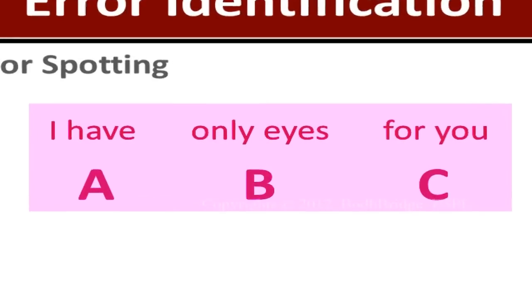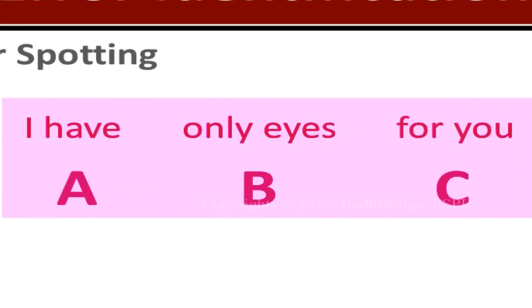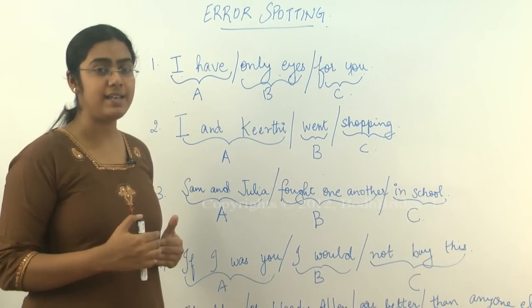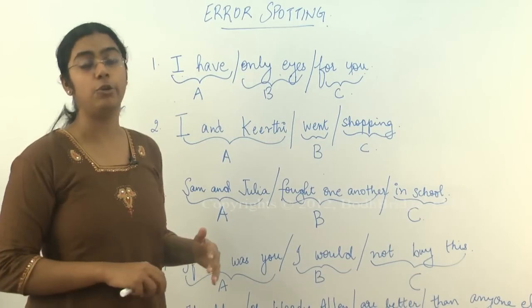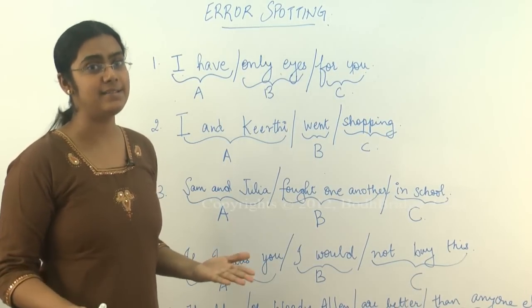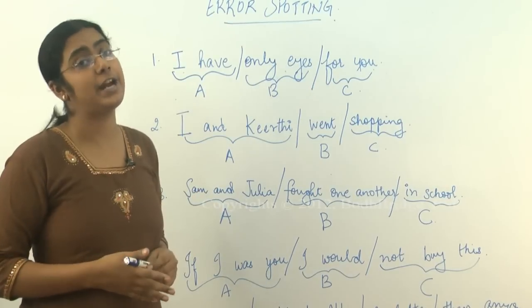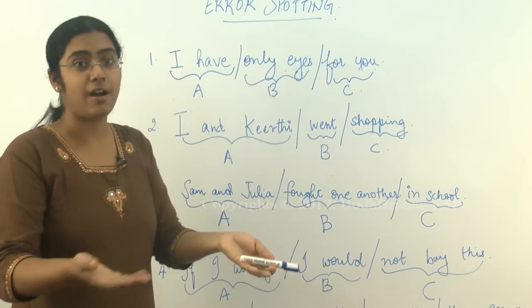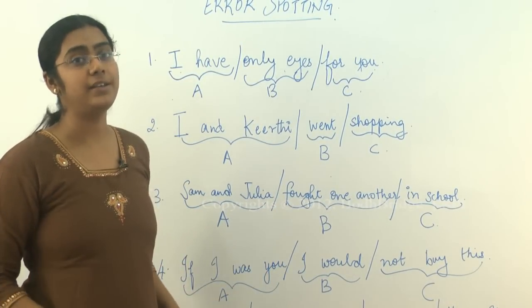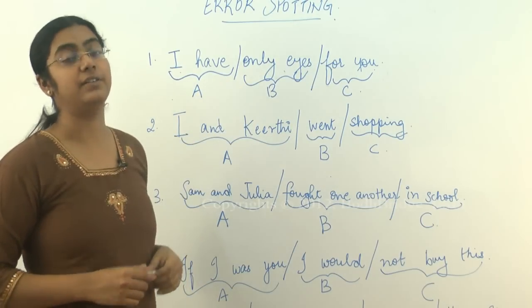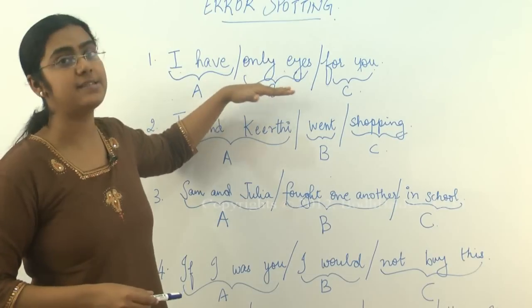Look into this closely. I have only eyes for you. You actually mean to say that you have eyes only for that person, meaning you don't want to see anyone else. You end up saying you have only eyes for that person, meaning your arms, your legs, rest of your body, that's all for someone else. That is the interpretation, the literal interpretation of this sentence.